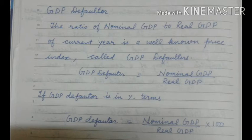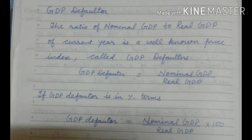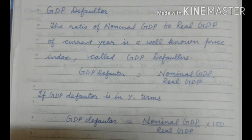Now we have the last topic: GDP deflator. It is the ratio of nominal GDP to real GDP for the current year — a well-known price index called the GDP deflator. GDP deflator = Nominal GDP ÷ Real GDP. If the deflator is to be expressed in percentage terms, then: GDP deflator = (Nominal GDP ÷ Real GDP) × 100.